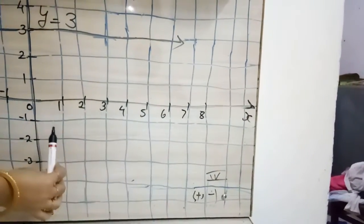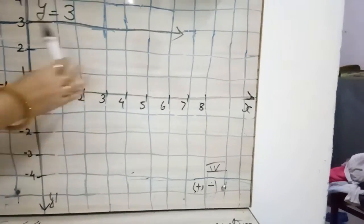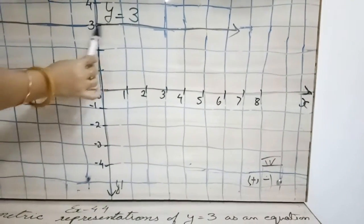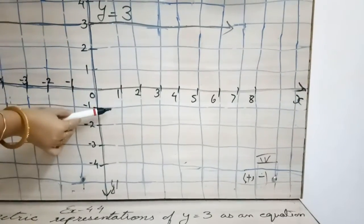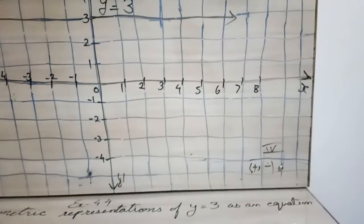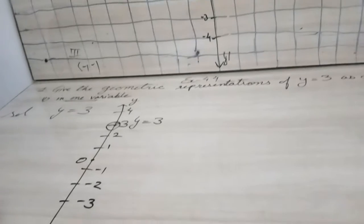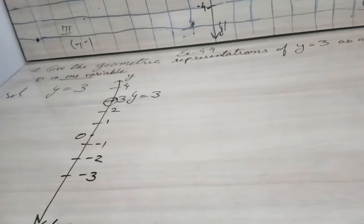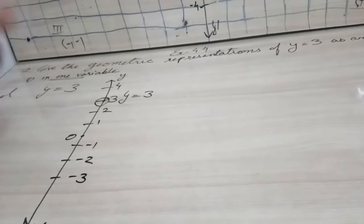Because this is the first question, they have given y equals 3, so we have plotted this. This will be representing in two variables. And when we draw on a single line, then y equals 3, we will draw the y-axis, and if the question is x, we will draw the x-axis.